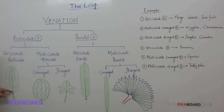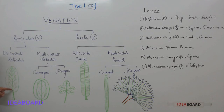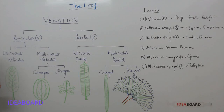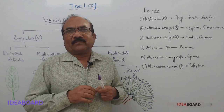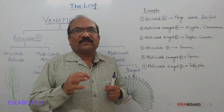There is one thick vein called the midrib or costa. It produces branches called lateral veins. Lateral veins produce sub-lateral veins, and sub-lateral veins produce veinlets. If these veinlets are fused, they make a network, and this network is called a reticulum.